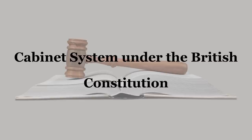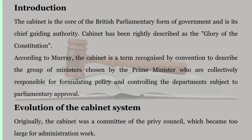Cabinet System Under the British Constitution. The Cabinet is the core of the British parliamentary form of government and is its chief guiding authority. Cabinet has been rightly described as the glory of the Constitution. According to Murray, the Cabinet is a term recognized by convention to describe the group of ministers chosen by the Prime Minister who are collectively responsible for formulating policy and controlling the departments subject to parliamentary approval.